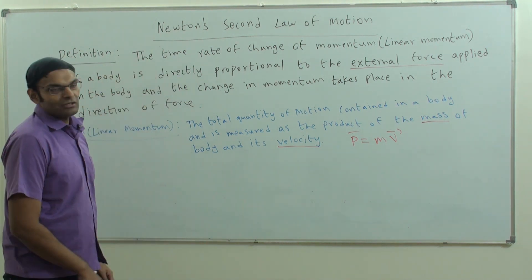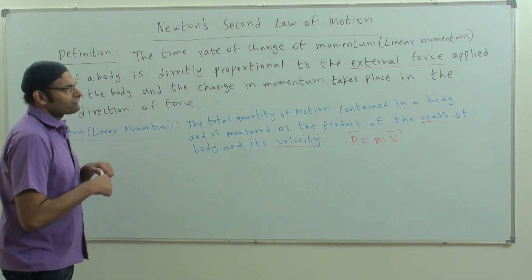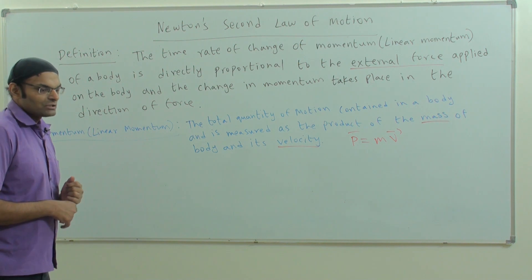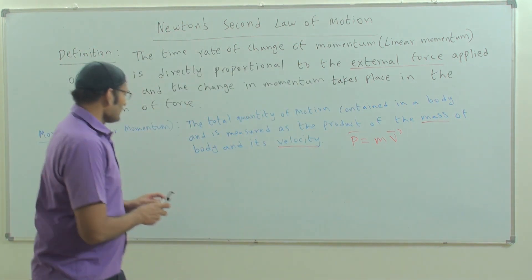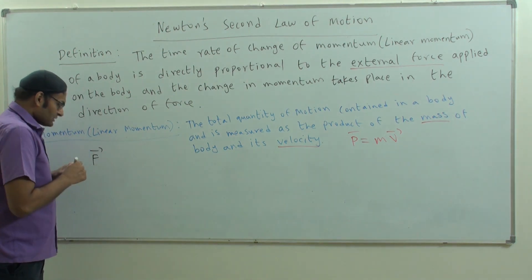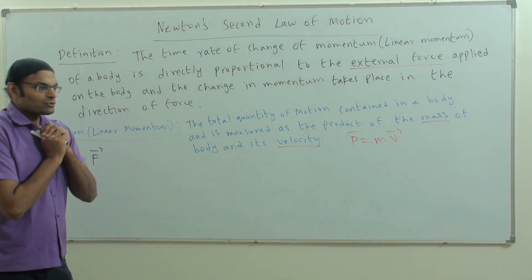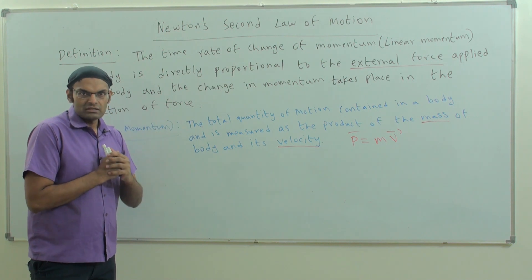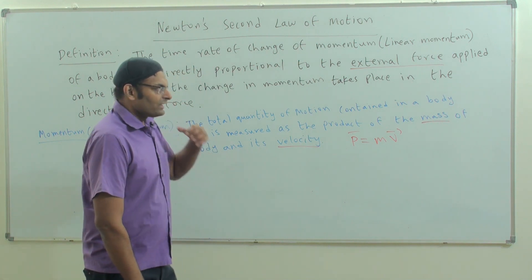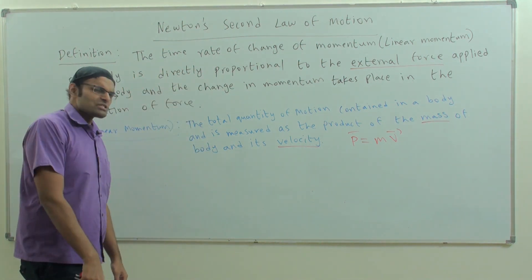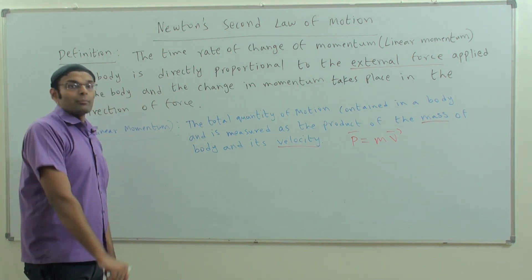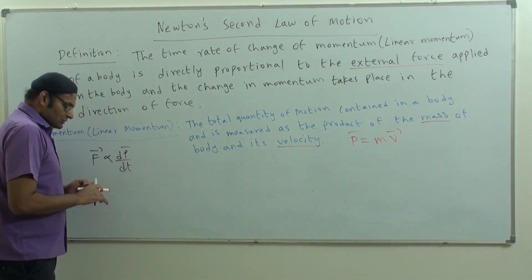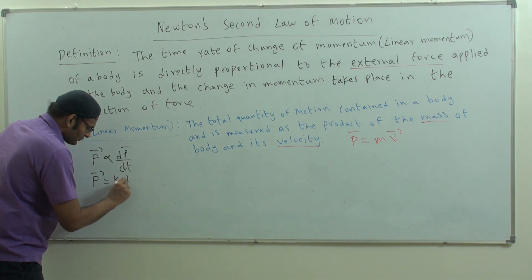Newton's second law of motion says that the time rate of change of linear momentum of a body is directly proportional to the external force applied on the body, and the change in momentum takes place in the direction of force. When I apply a force on a body moving at velocity V, the velocity changes, causing a change in momentum. Therefore, F-bar is directly proportional to dP-bar by dt.